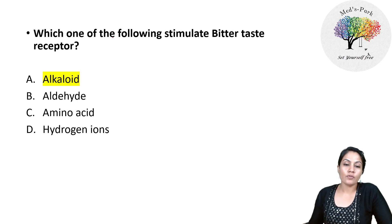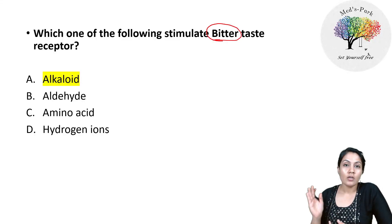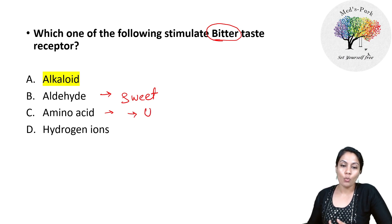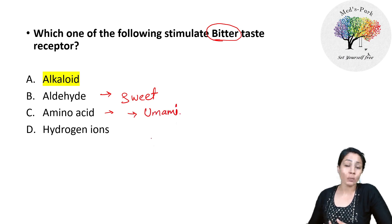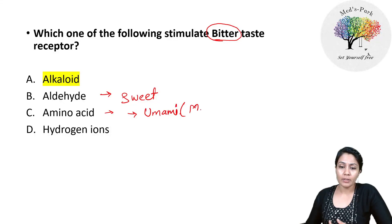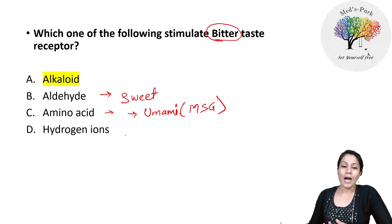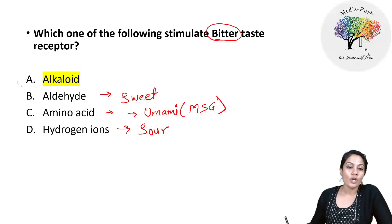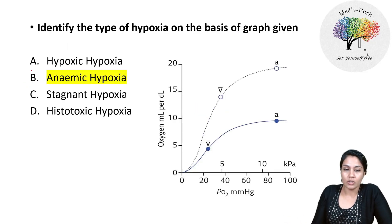Which of the following stimulates bitter taste? Aldehydes and amino acids usually give sweet sensation; amino acids can also give umami taste, like monosodium glutamate. Hydrogen ions present in acids like citric acid give a sour taste, not bitter. Alkaloids are what give us the bitter taste.